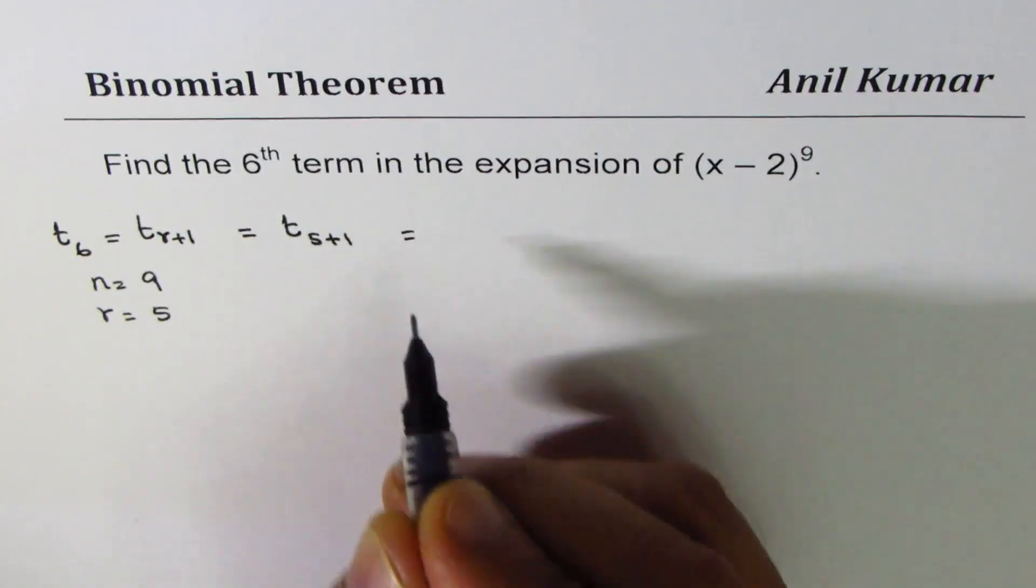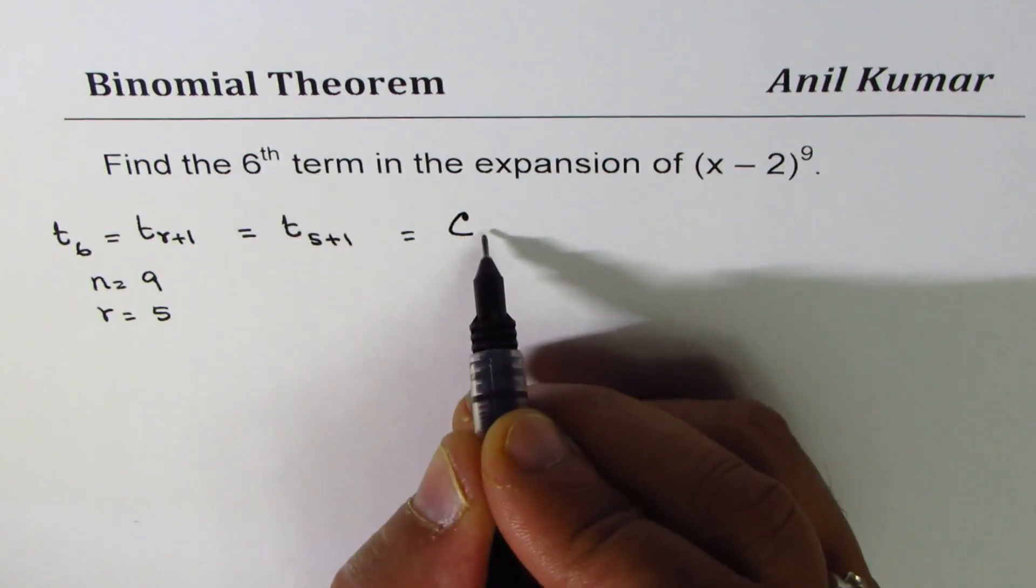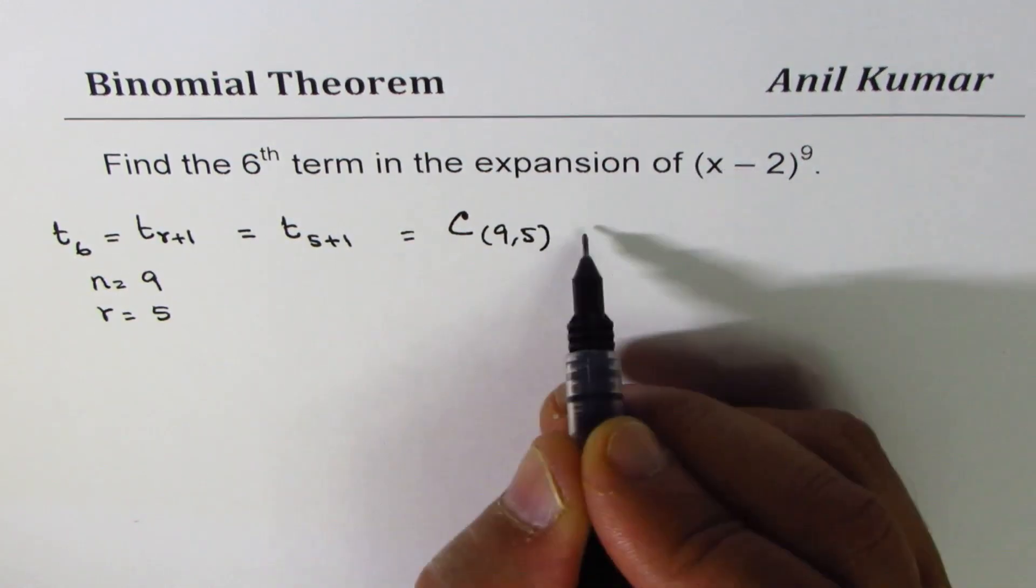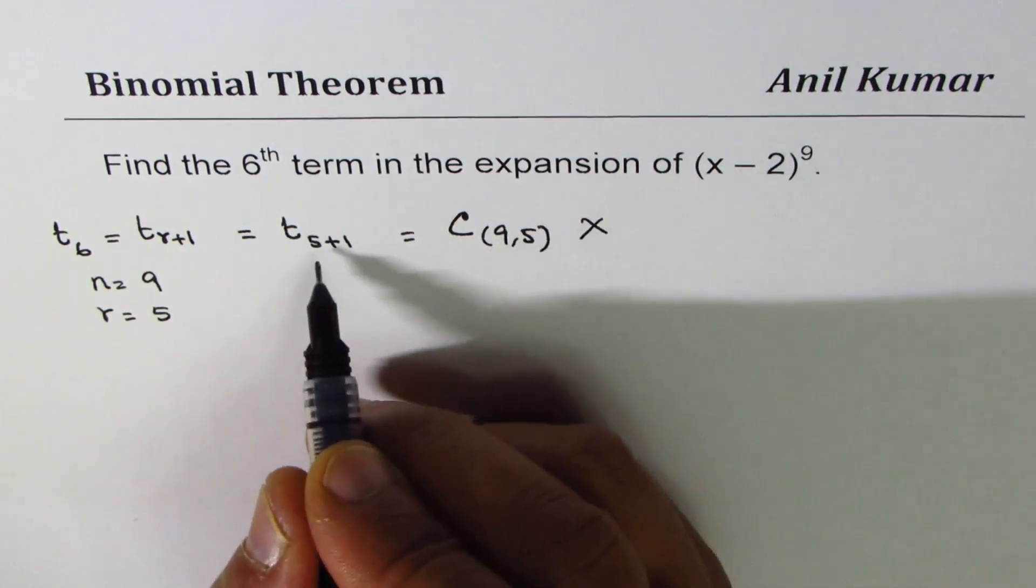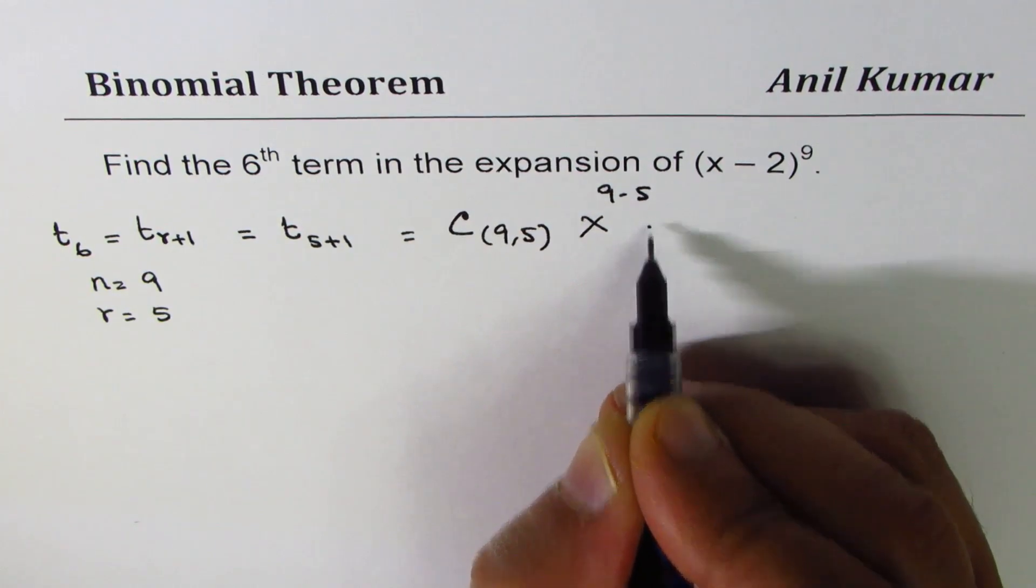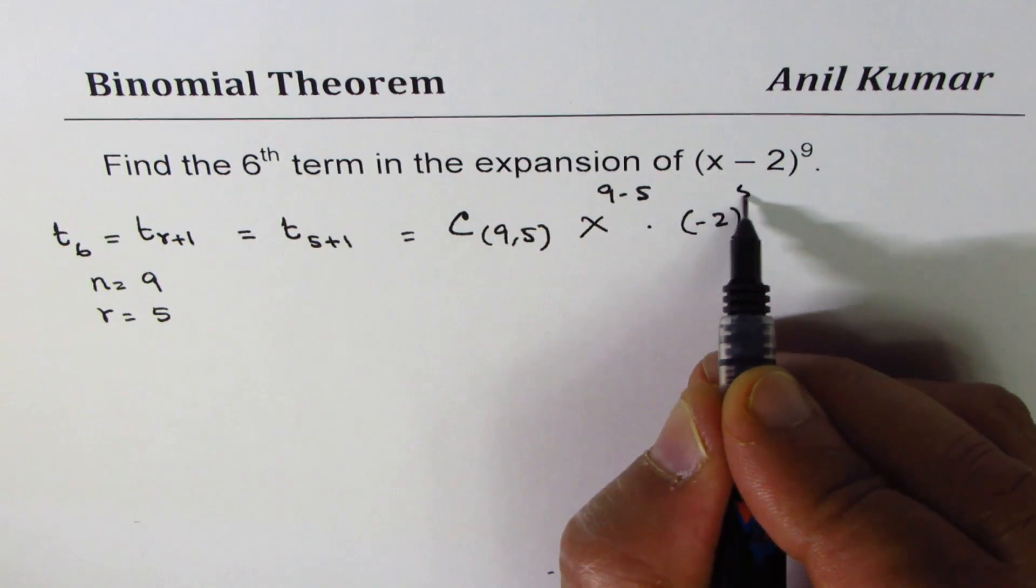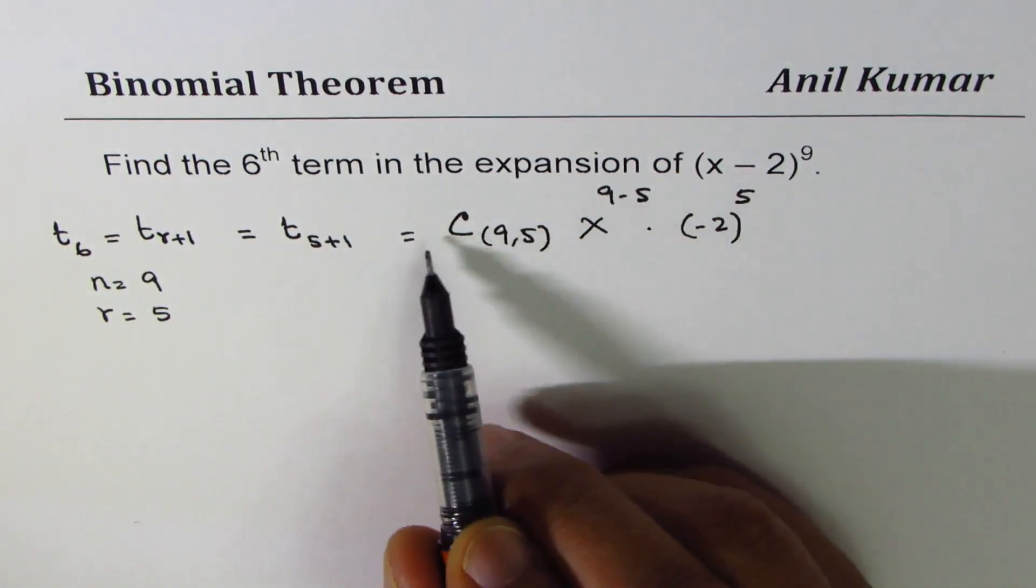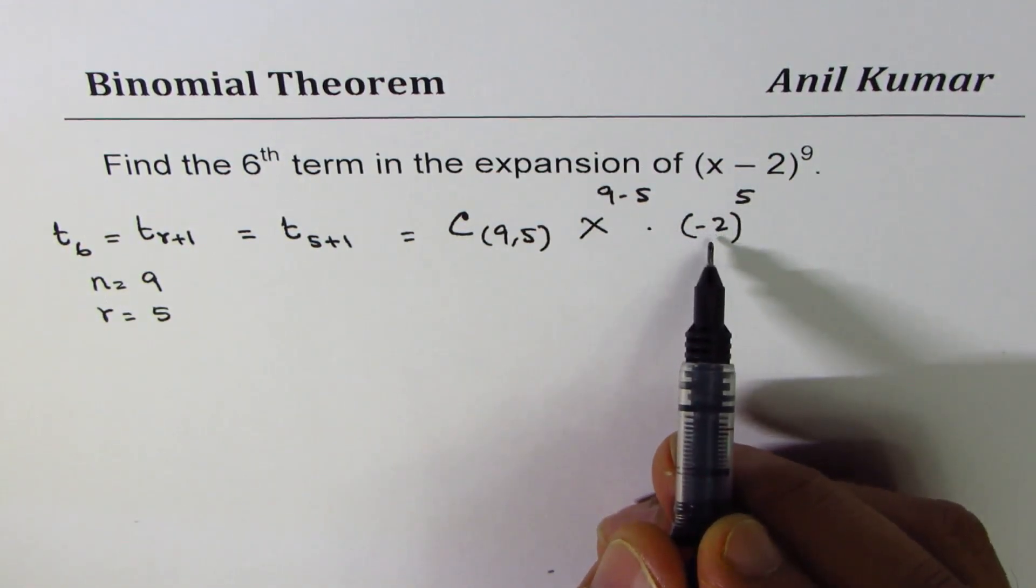Now we'll use the general formula which is nCr or you can write C 9 and r is 5 for us, x to the power of r which is 9 minus r which is 5, which is 9 minus 5 times minus 2 to the power of 5. So that is how you could write. Whenever we have negative either you could write minus 1 to the power of 5 or you could include it.